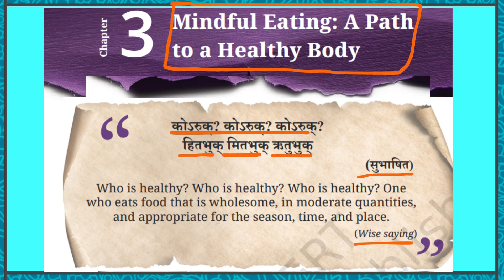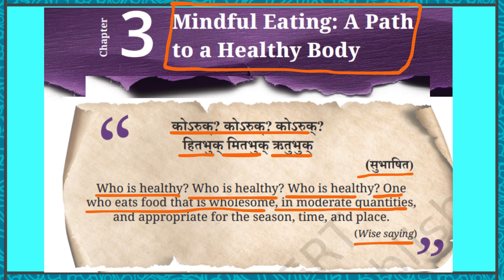Koiruk means 'who is healthy.' So who will be healthy? The one who follows these three ways. Hitbhuk means eating food that is wholesome — food that the body needs, containing all nutrients. Mitbhuk means eating in moderate quantities — not too much, not too little. Ritbhuk means eating according to the season — whatever grows in that season should be eaten.